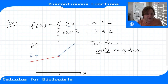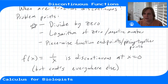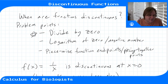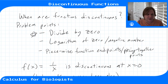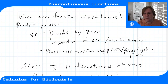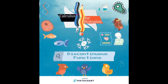When looking at these functions, go back to this list of problem points. Assume a function is continuous at all points except when you're dividing by zero, trying to take the log of zero or a negative number, or at the piecing-together points of piecewise functions. If the pieces agree at those joining points, it's continuous; if they don't agree, there's a jump and it's discontinuous.